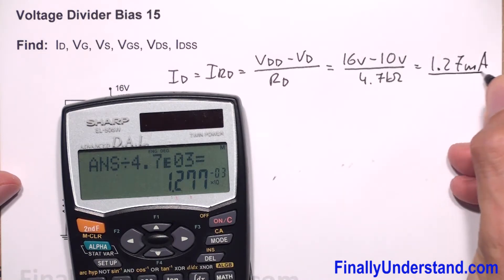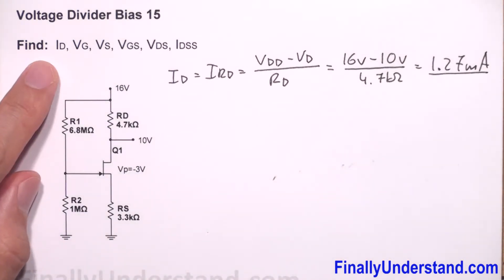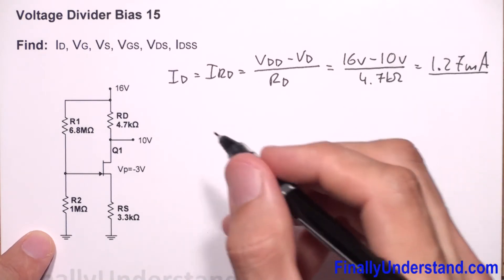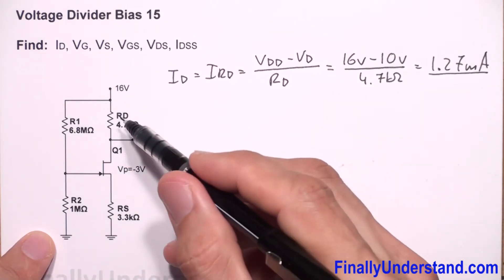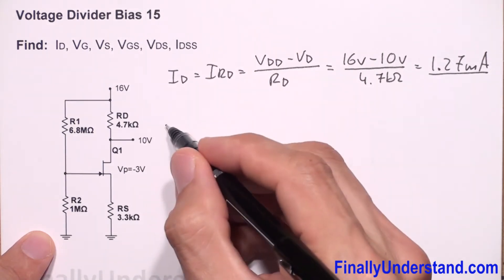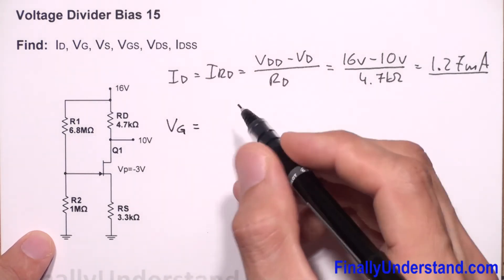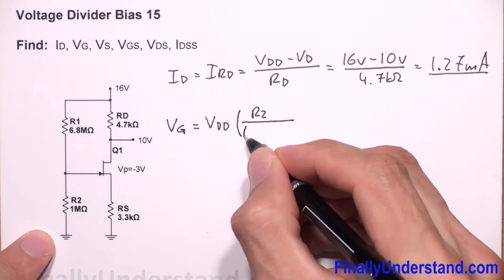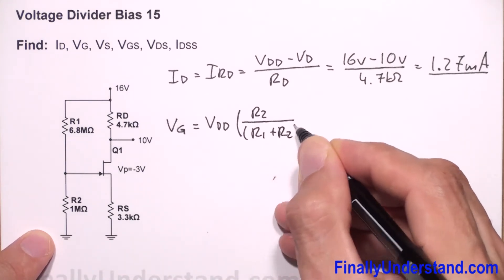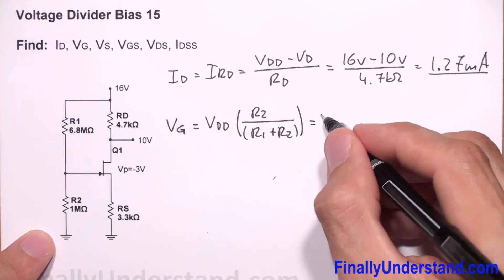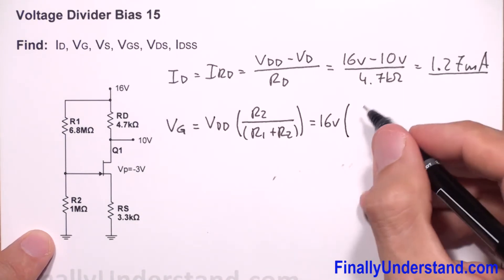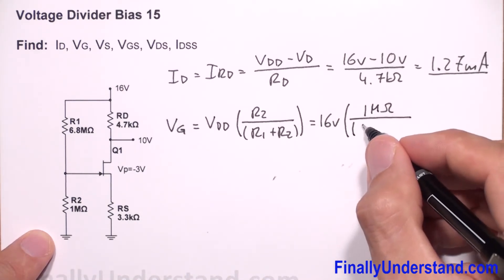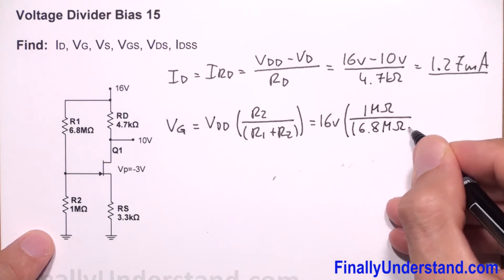Next, we need to find VG — the voltage at the gate of the transistor. We use the voltage divider formula: VG = VDD × (R2 / (R1 + R2)). That is 16 volts times R2 = 1 megaohm, over the sum of 6.8 megaohms plus the remaining resistors.